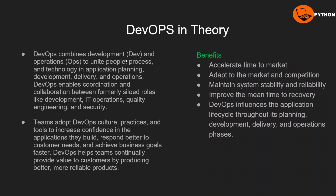DevOps combines development and operations. Development means who will code it — the developer team — and operations means who will support the infrastructure and production layer. DevOps brings together people, process, and technology in application planning, using both the developer team and operations team together.